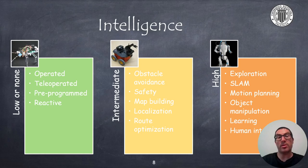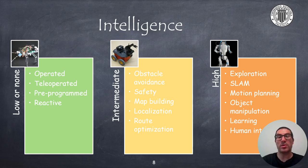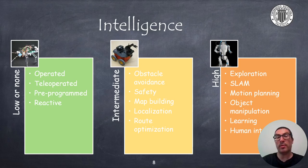Then we have robots with higher degrees of intelligence, for instance those that can detect or avoid obstacles and process sensor data in a more elaborated way, and those that include elements that make the system safer. Some robots may also include map building, localization, and route optimization, among other features, that allow them to work in semi-structured environments. And of course there are robots with a much higher degree of intelligence that include features such as exploration, simultaneous localization and map building or SLAM, motion planning, object manipulation, robot learning, human-robot interaction, etc.